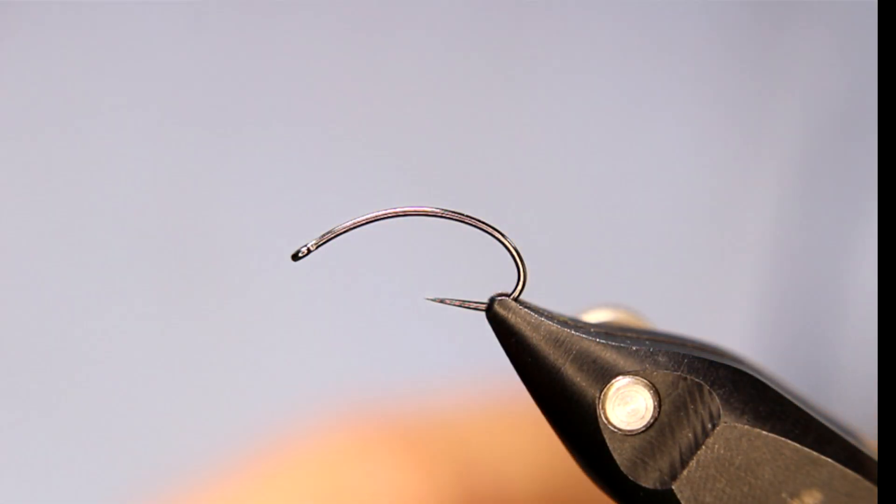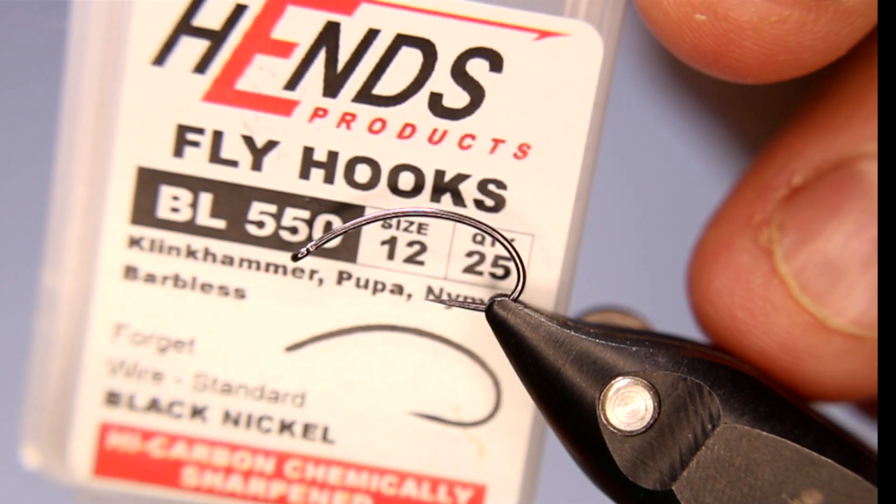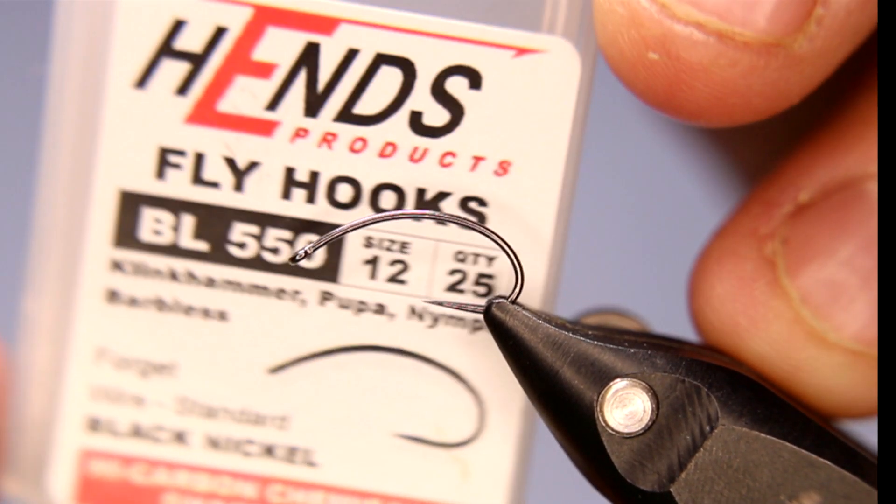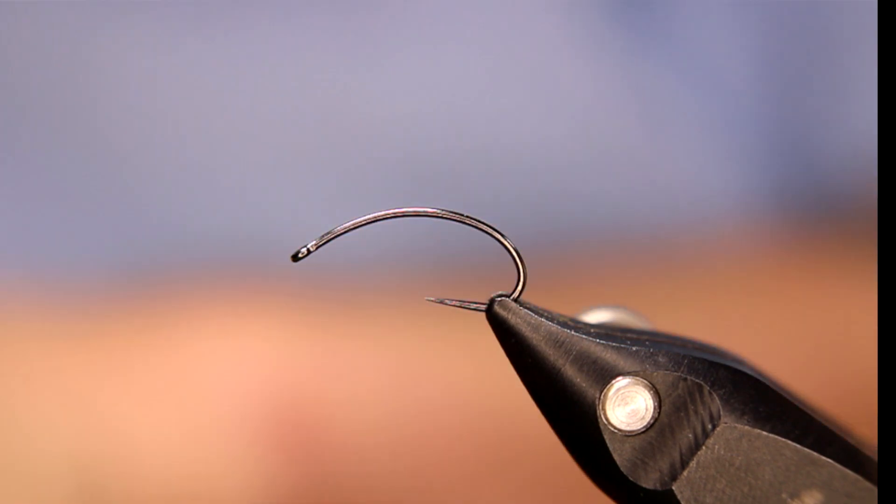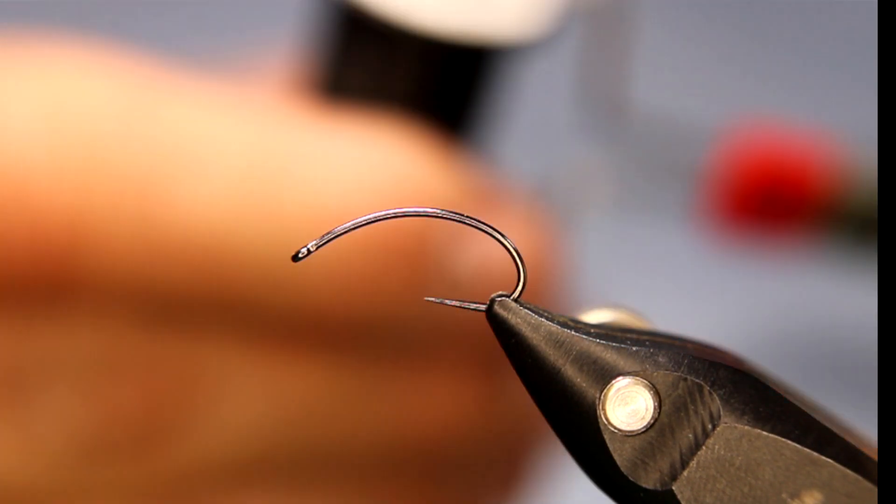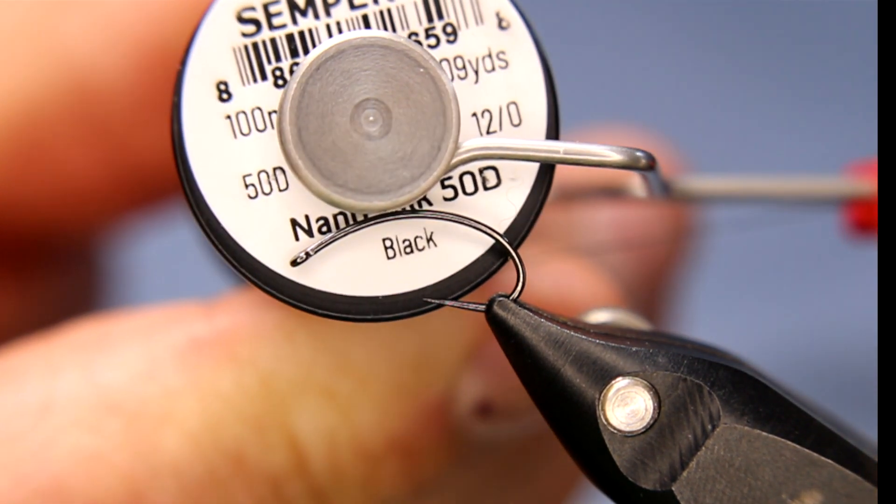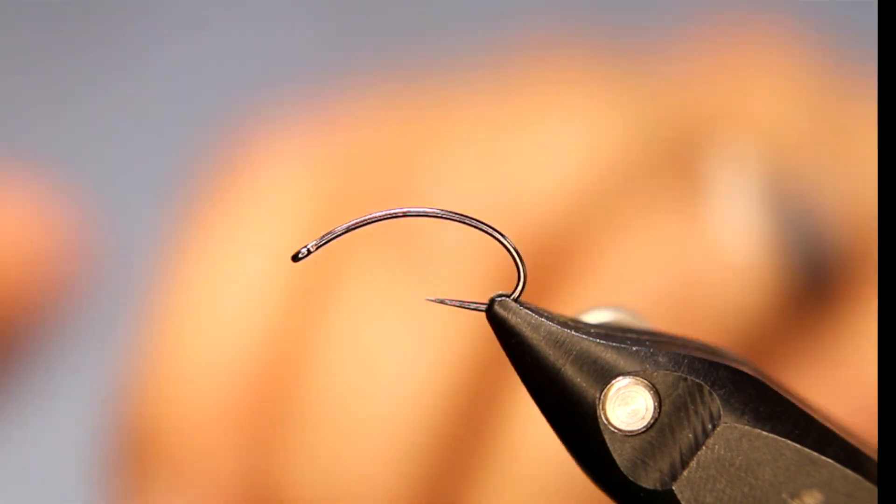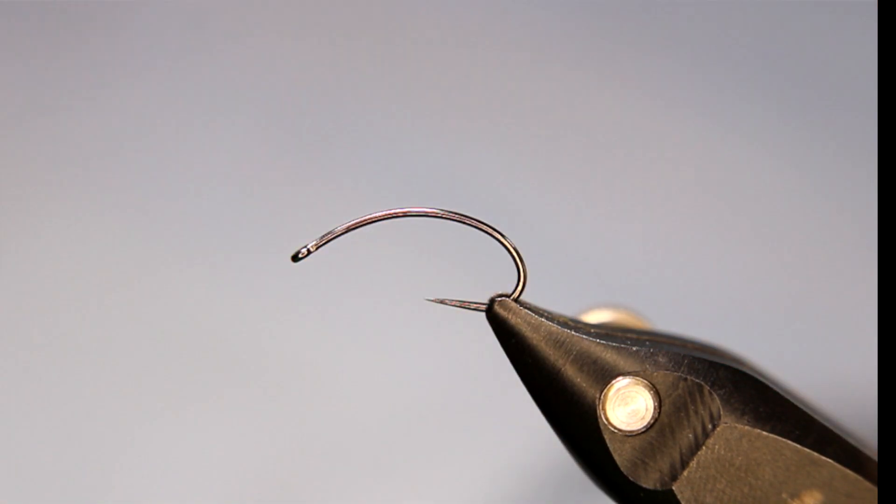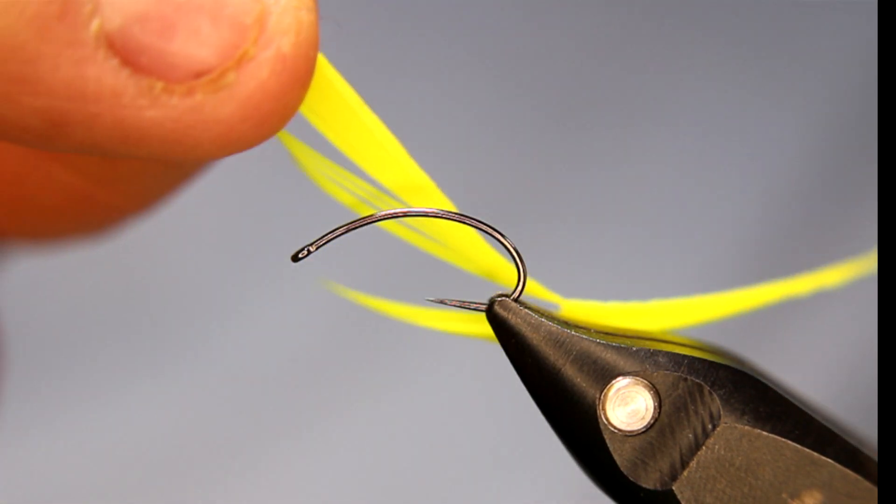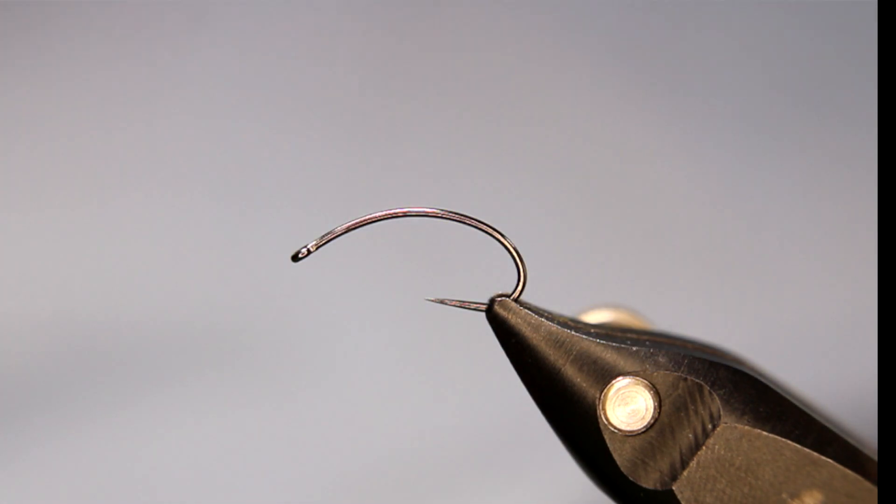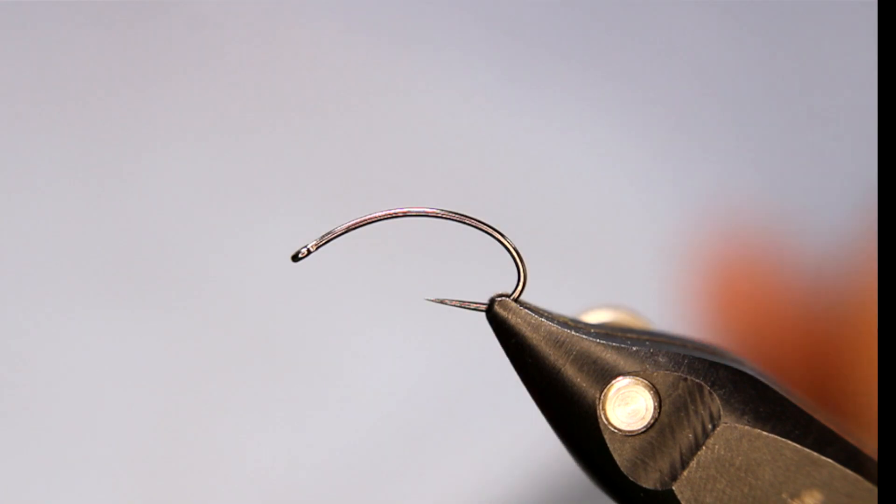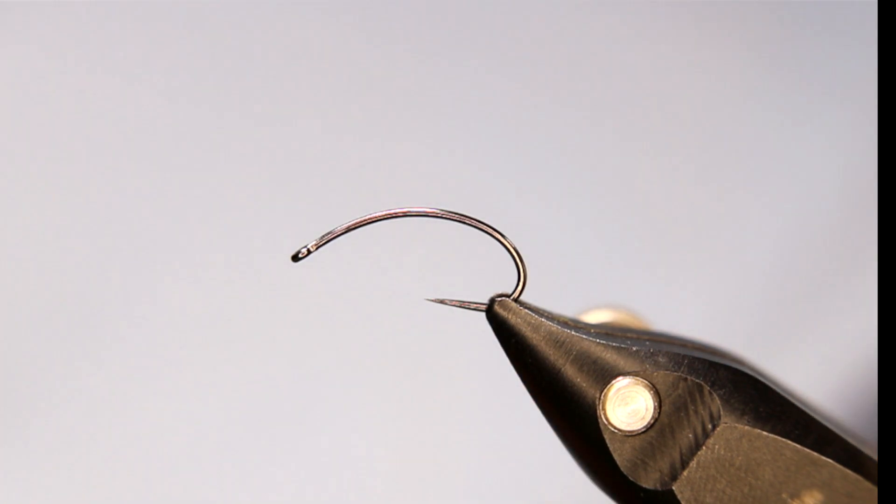In the vise today I've got a Hends BL 550 in a size 12. I really like these clink hammer, the Hends clink hammer hooks for chironomids. Semperfli nano silk in black, and I'll be using some chartreuse body span and some chartreuse goose biots. That's it. I might put in a little flashy head, we'll see if I feel like it.